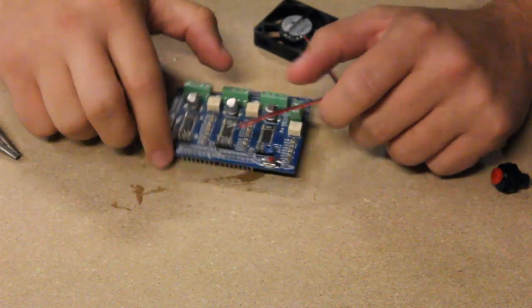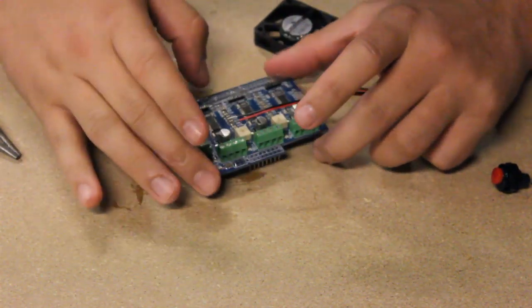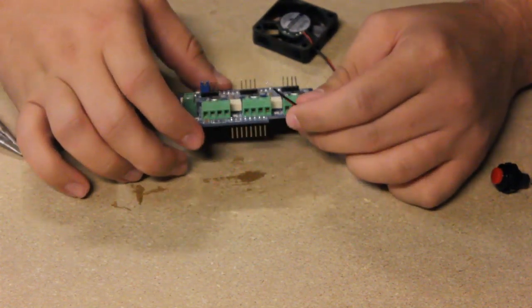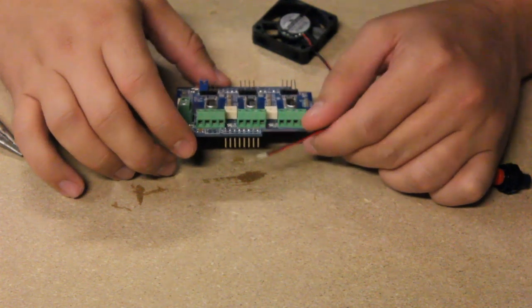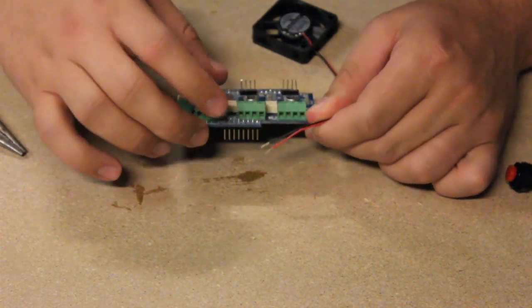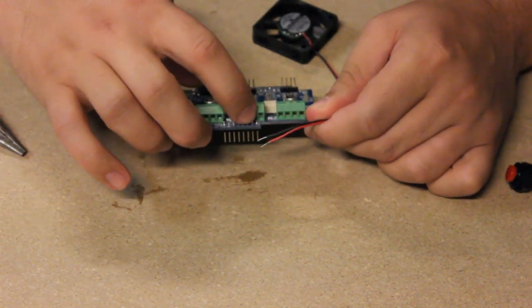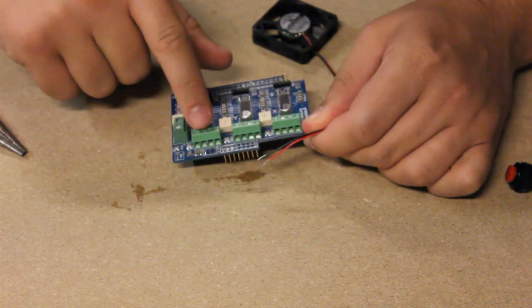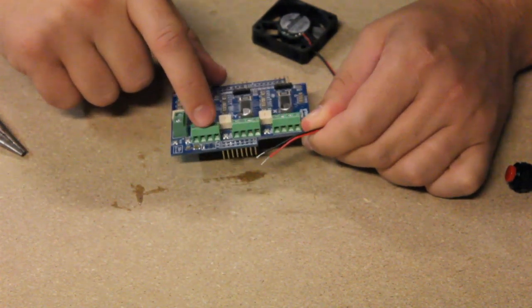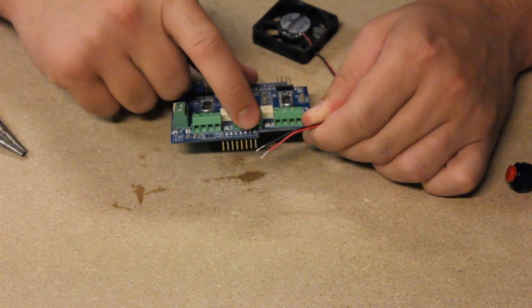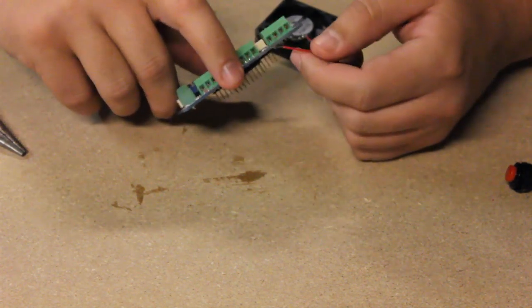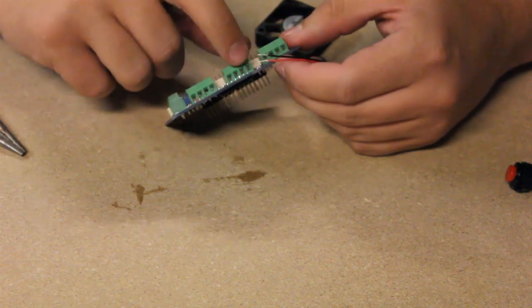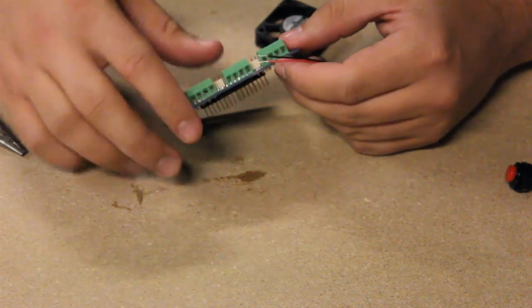To hook up the fan we're going to solder in the two fan leads into the ground and the VIN pin, which are going to be the ground is the second one from the end on the side where you plug in your stepper motors, and the VIN is going to be all the way on the end. I'm going to do them from the back side because I don't want it to interfere with my stepper motors.